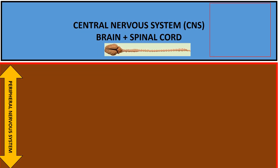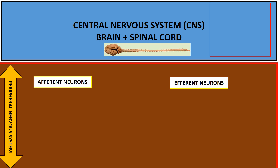On this slide, I will explain diagrammatically how the central nervous system and the peripheral nervous system interact with each other. They interact through two types of nerve cells known as afferent neurons and efferent neurons.